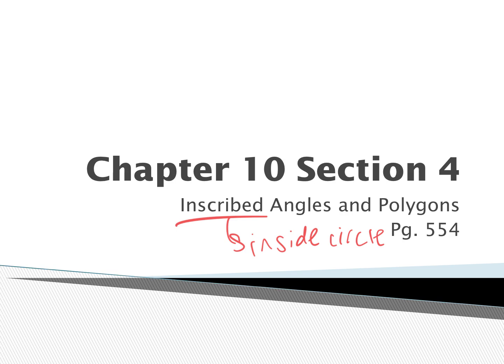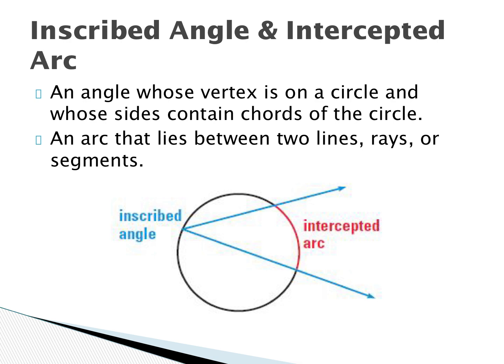What we've seen in the past is a central angle, where the vertex was in the center of the circle. An inscribed angle is an angle whose vertex is on the circle and whose sides contain chords of the circle — the vertex is no longer in the center. The arc that lies between the two sides of an inscribed angle is called the intercepted arc, and that is the arc across from your angle.